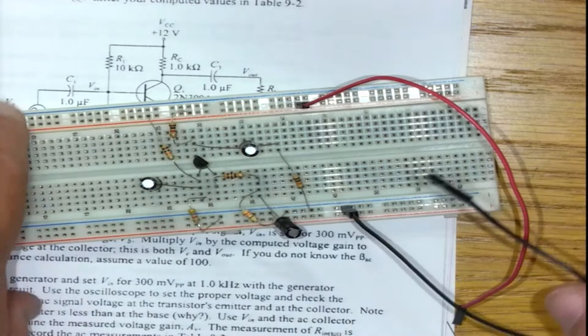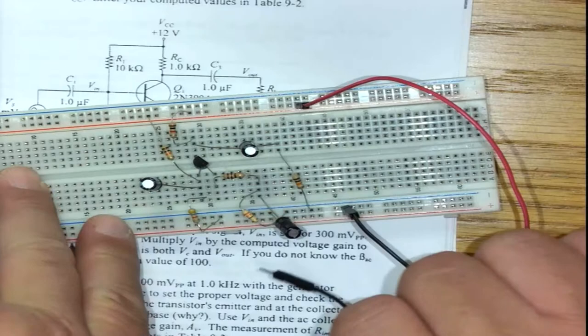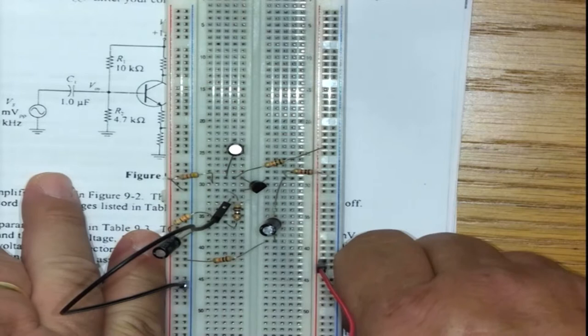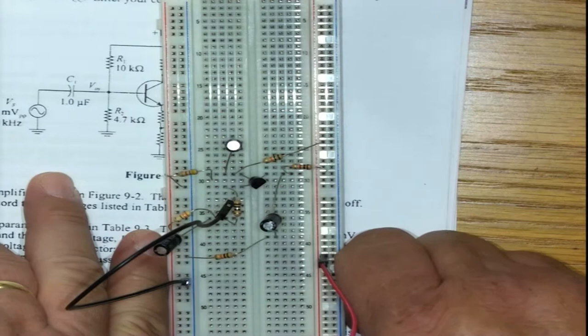To recap, make sure VCC is in your red line on top. Ground is in the blue line at the bottom. Do not orientate your breadboard like this. You are crazy if you are doing that and you are going to be penalized in terms of your results and your marks. Orientate the board like this.